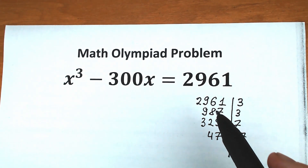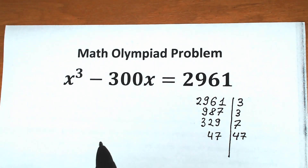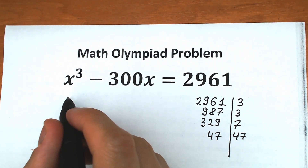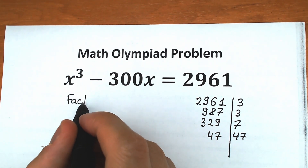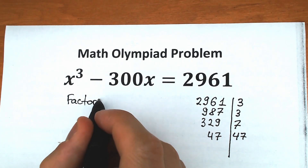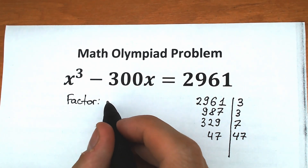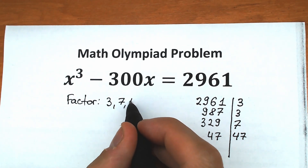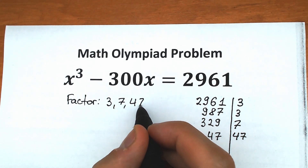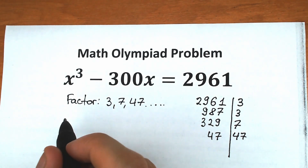Now let's check the factors in this equation. The factors are 3, 7, and 47. Let's start by checking these factors one by one.